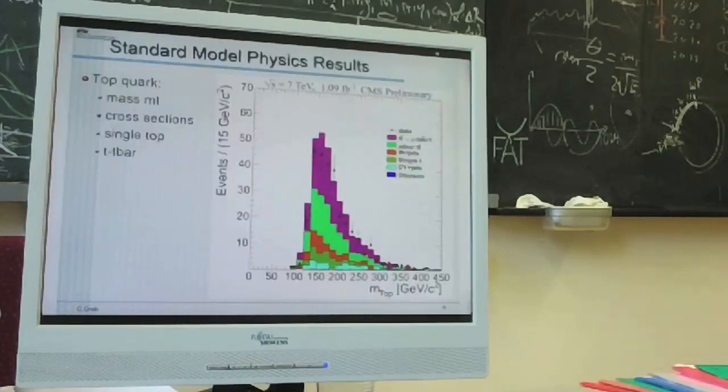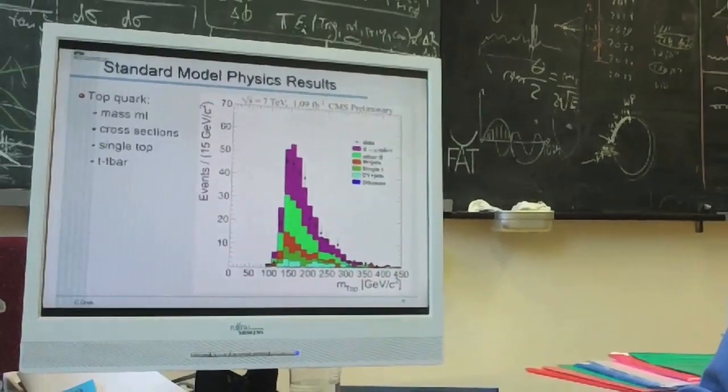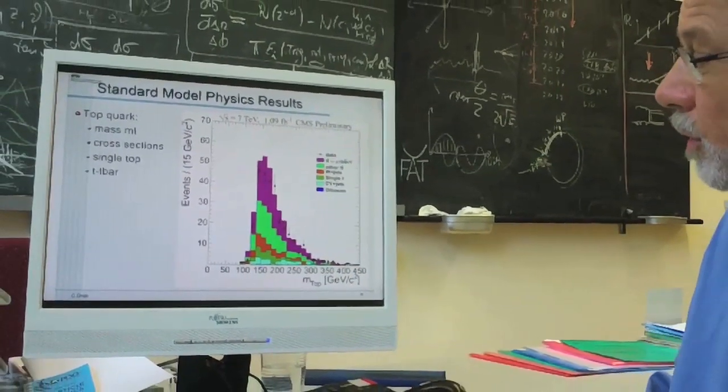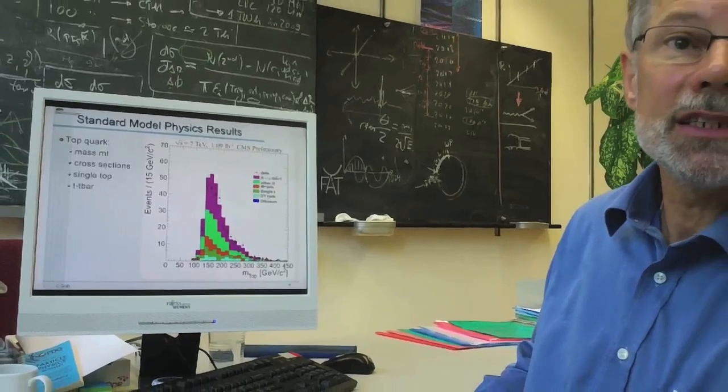So understanding the standard model process is an important issue because it is the background for your searches. Then, of course, we have measured the top quark, which has been elusive and only produced in the US for a long time. So we measure, for instance, its mass, how often it is produced, if it is single-produced, if it is double-produced. And we have scrutinized that already in detail.